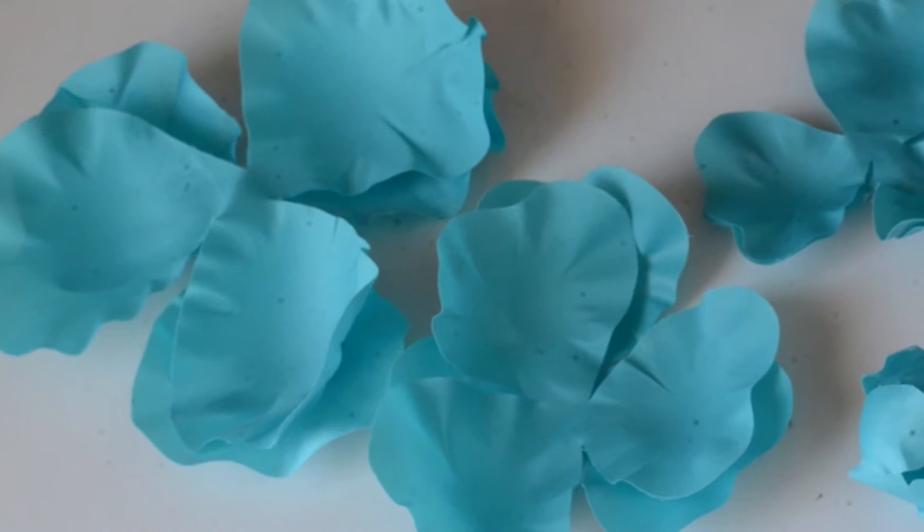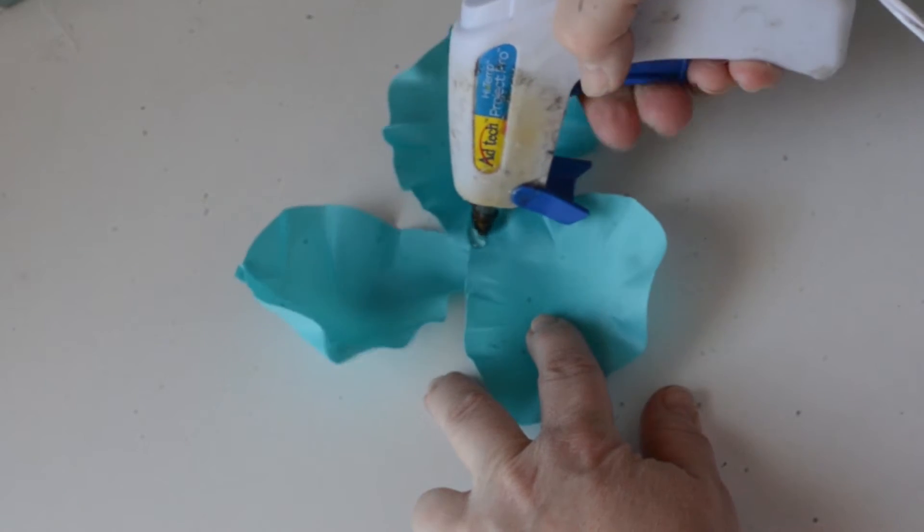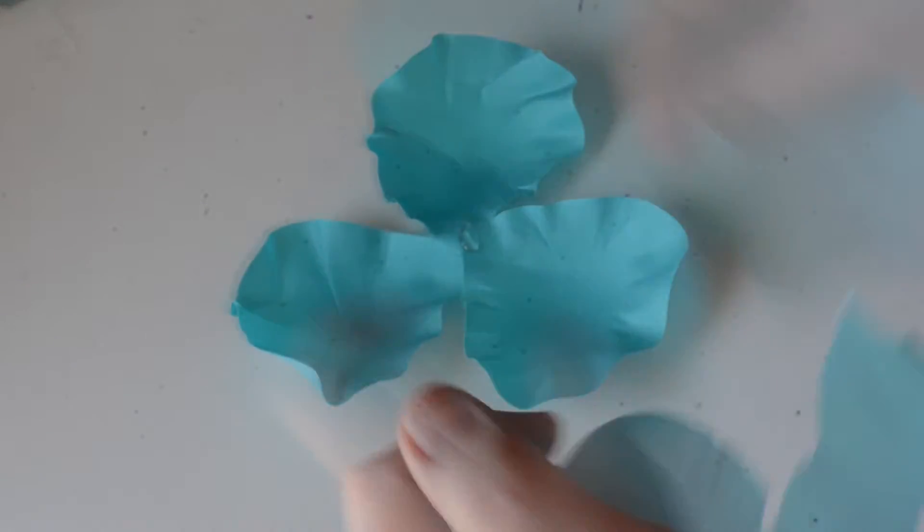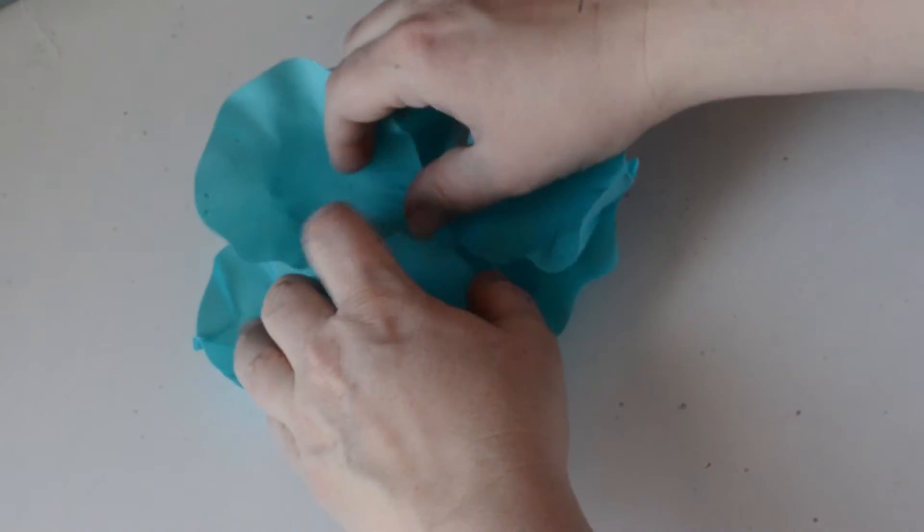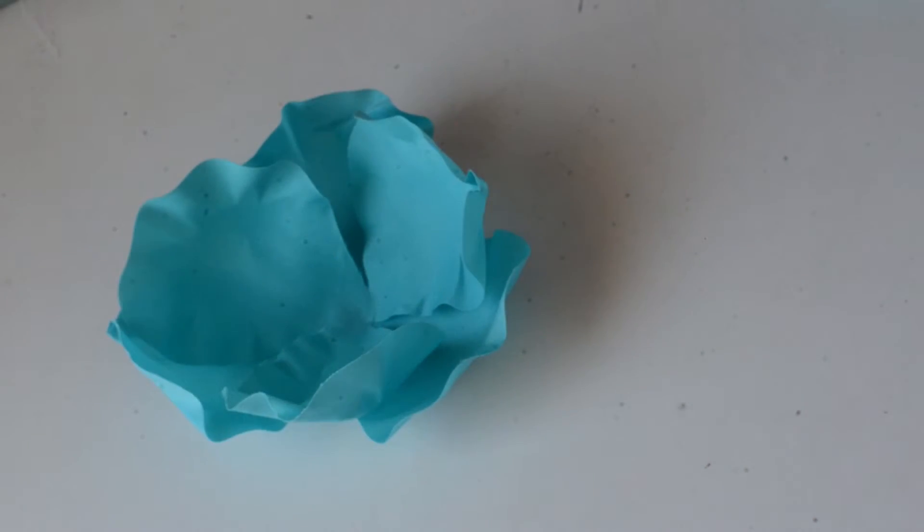To make a stemless peony, separate the petals according to size. First, we'll assemble each layer. Lay a large petal down and put glue in the center. Lay the other large petals on top in an alternating fashion.